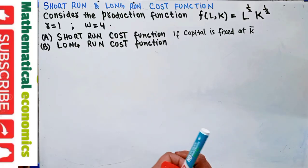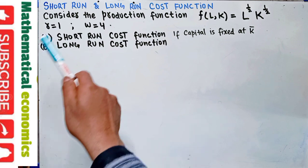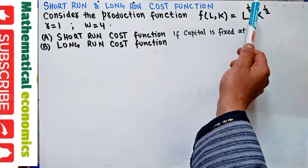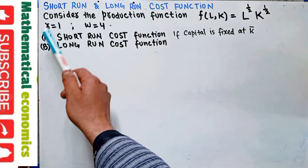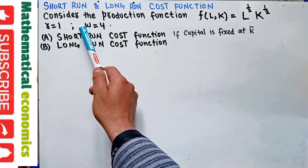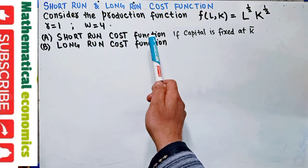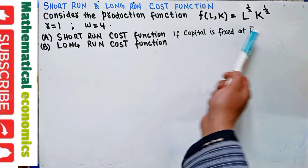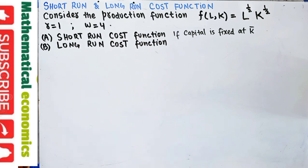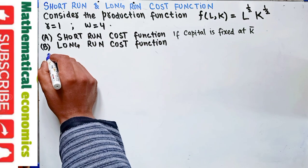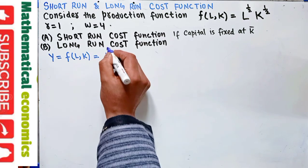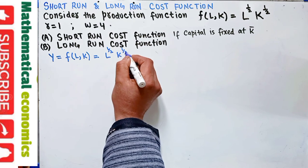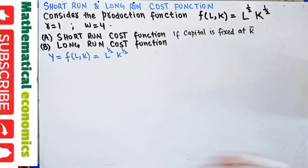How to derive short-run and long-run cost functions from a given production function. Consider the production function f(L, K) = L^(1/2) × K^(1/2), where L and K denote units of labor and capital employed. The rental rate of capital r is $1 and the wage rate w is $4. We need to derive the short-run cost function when capital is fixed at K̄, and also the long-run cost function. This is a Cobb-Douglas production function.